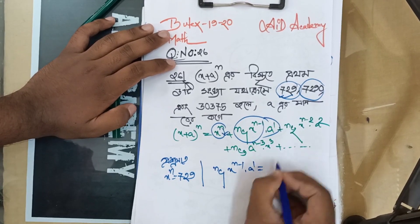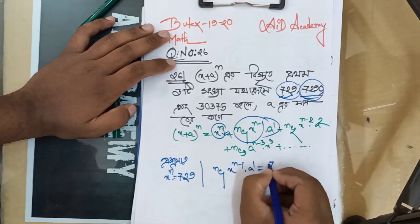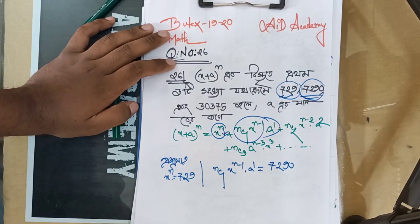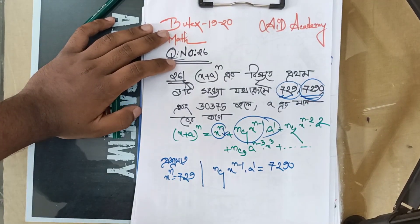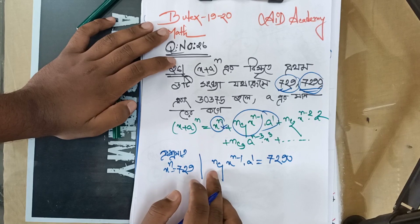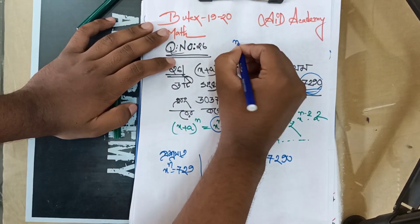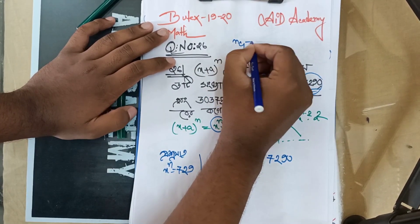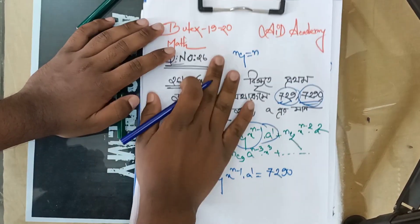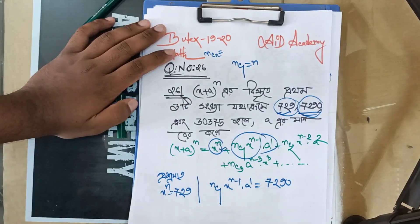A to the power 1 is 7290. We have got this equal to a complete expression. nC1 — the value of nC1 is the value of N. We have to add nC1 into nC1.